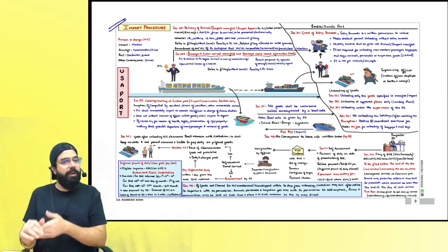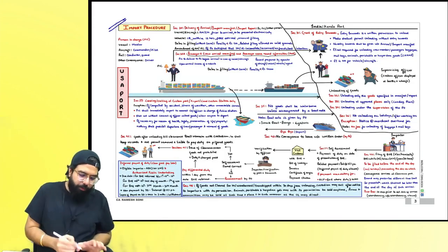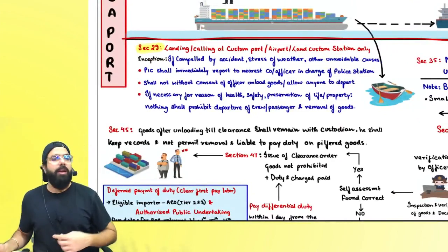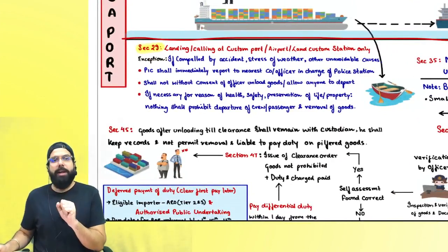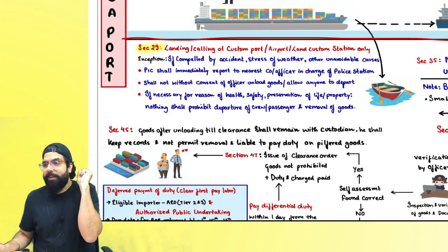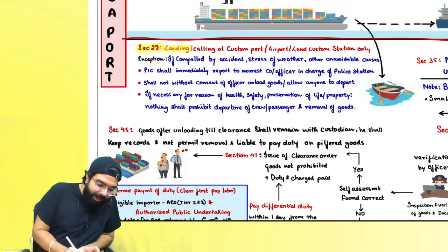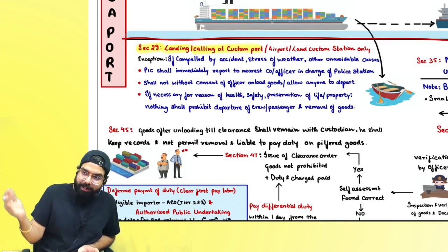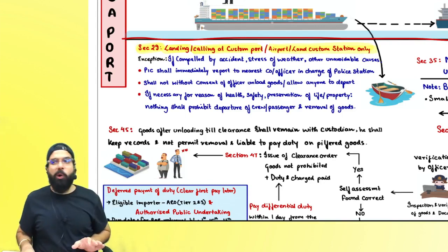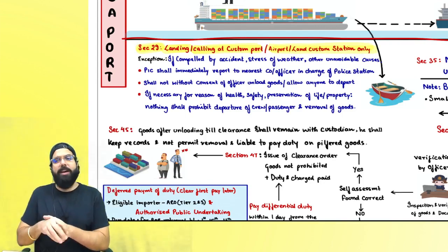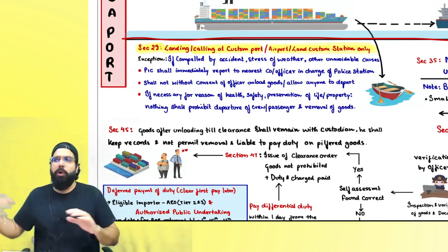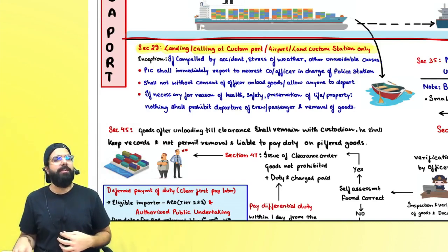Section 29 comes into picture, which says whenever a ship, vehicle, or plane is coming into India, the landing by the aeroplane, or the quailing by the vessel or vehicle, should always happen at a custom port, custom airport, or land customs station. A ship should come at a custom port, aircraft at a custom airport, and a vehicle at a land customs station.